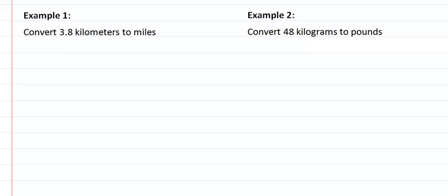So let's take a look at example one. We are trying to convert three point eight kilometers to miles. So what we need is a conversion to go from kilometers to miles. We have that one point six one kilometers equals one mile. So that's my conversion that I am going to use.